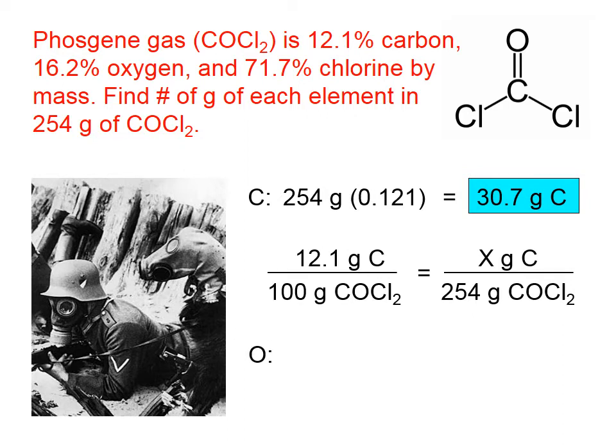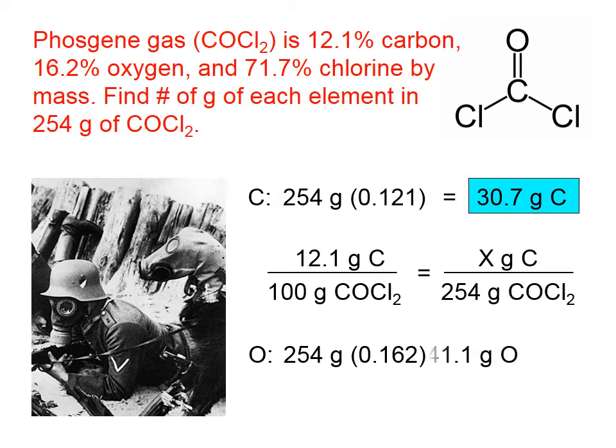We'll do the same thing for oxygen. Take the total sample of phosgene multiplied by the decimal form of the oxygen percentage, 0.162 — notice we've moved the decimal two places to the left — and that gives us 41.4 grams of oxygen.